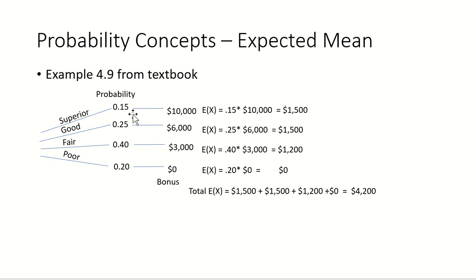If we know all this data, we can calculate the expected average bonus that everybody's going to get. So if I take the expected value for this top part, 15% are going to get $10,000. 0.15 times $10,000 is $1,500. For the next path, 25% are going to get $6,000. 0.25 times $6,000 is $1,500.